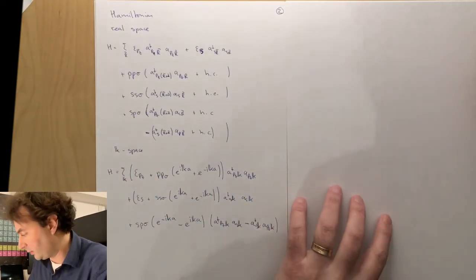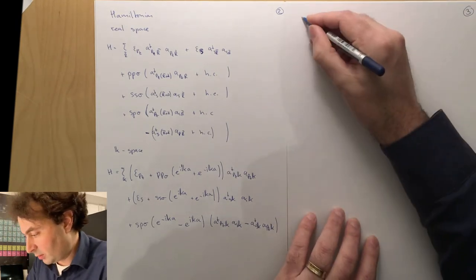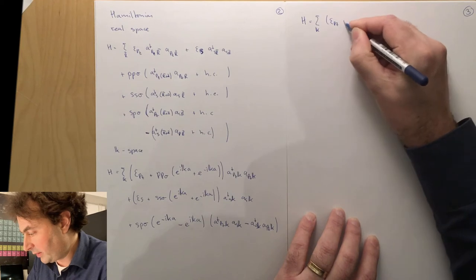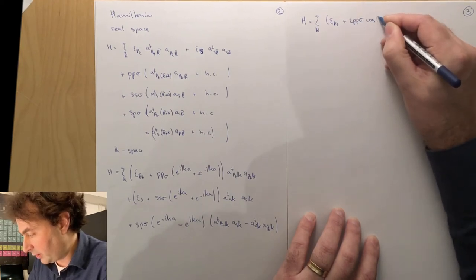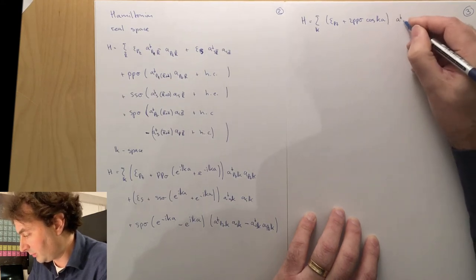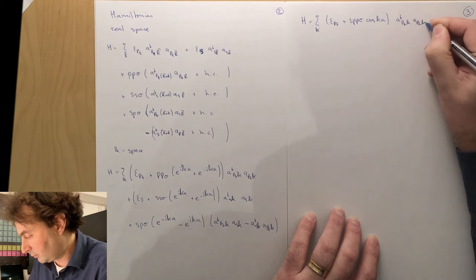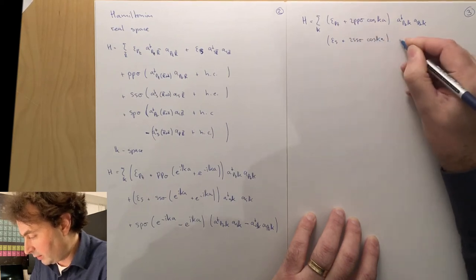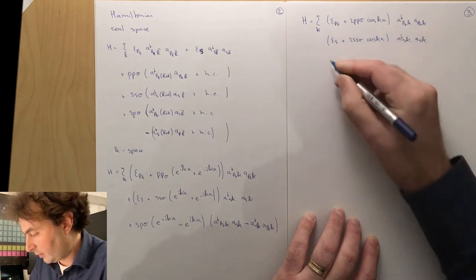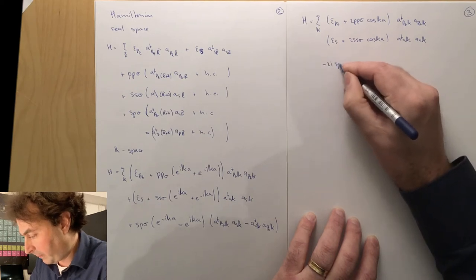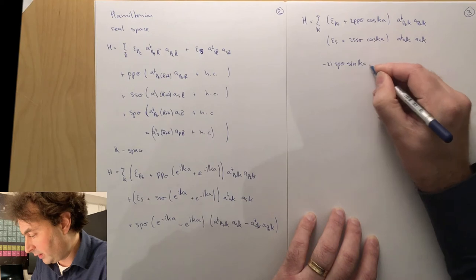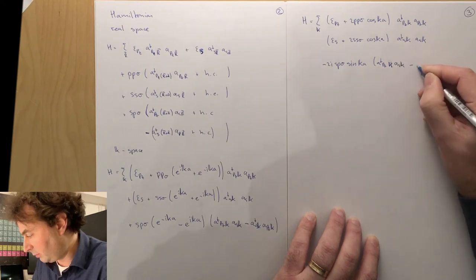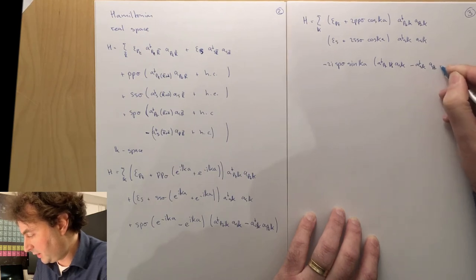Now let's simplify things, put in the cosine and sine functions. We have epsilon pz plus 2*pp sigma*cos(ka) for the dispersion of the pz orbital. We have epsilon s plus 2*ss sigma*cos(ka) for the dispersion of the s orbital. And we have an interaction: minus 2i*sp sigma*sin(ka) times a dagger pz k, as k, minus a dagger s k, apz k.